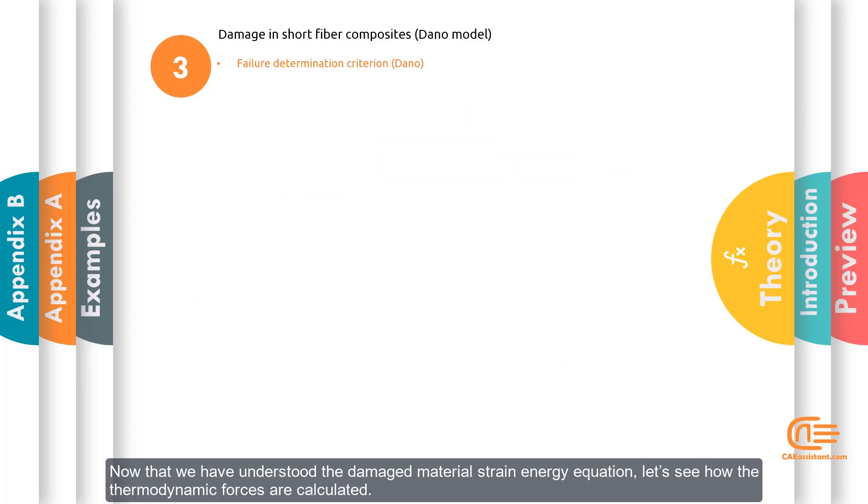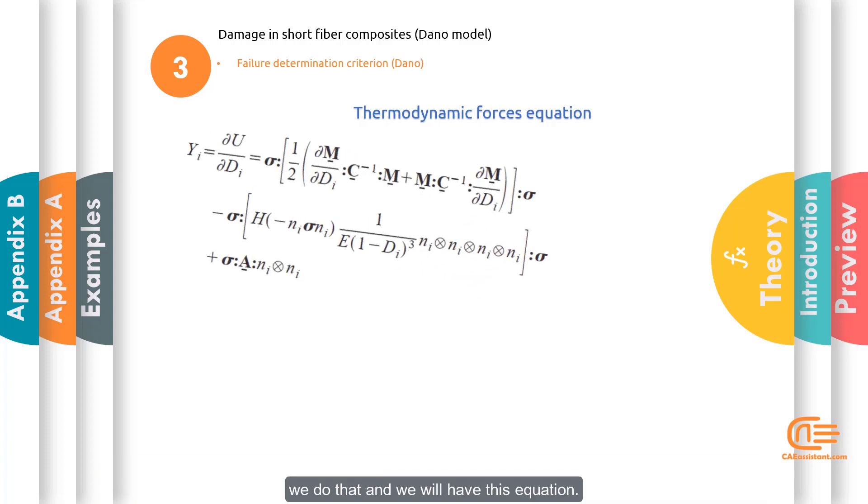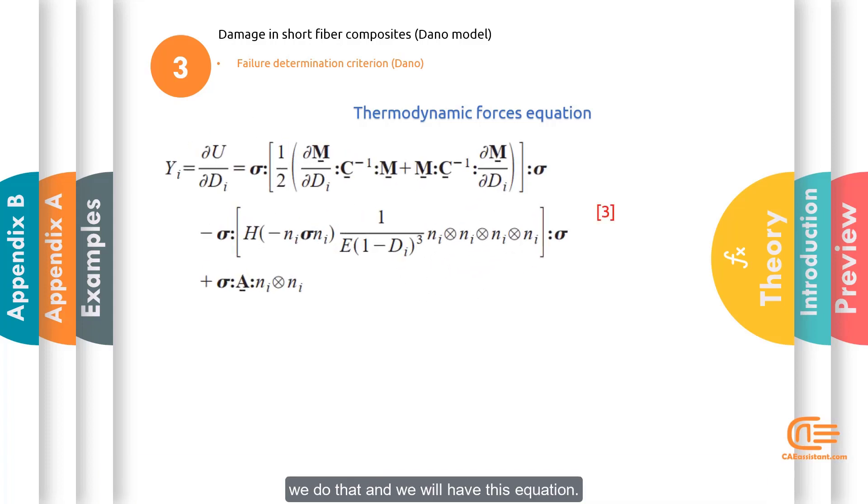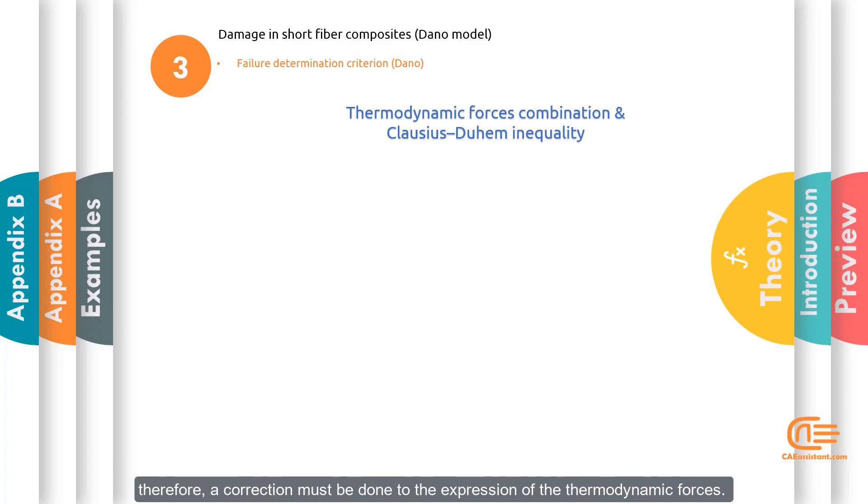Now that we have understood the damaged material strain energy equation, let's see how the thermodynamic forces are calculated. As I said earlier, we need to take the derivative of the damaged material strain energy formula with respect to the associated damage variables. We do that and we will have this equation. Next, we must take into account the possibility of interaction between the principal damage directions. Therefore, a correction must be done to the expression of the thermodynamic forces. A weighted sum of the thermodynamic forces or thermodynamic forces combination must be used.